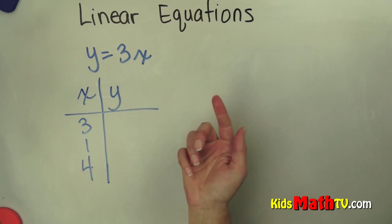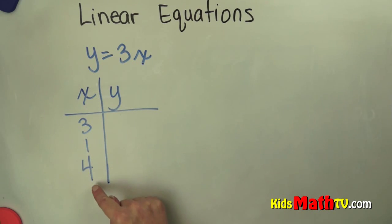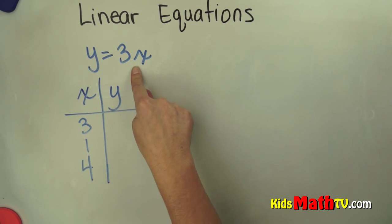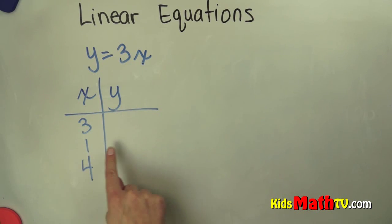So what I want to do is choose some values for x, and I have chosen just some basic pretty easy numbers: 3, 1, and 4. And then what I will do is I will substitute them in here and find out what y will equal, and then we'll have some sets of coordinate pairs to graph on a coordinate grid.